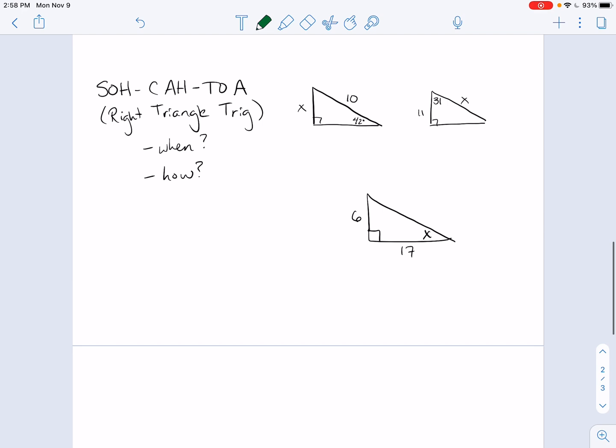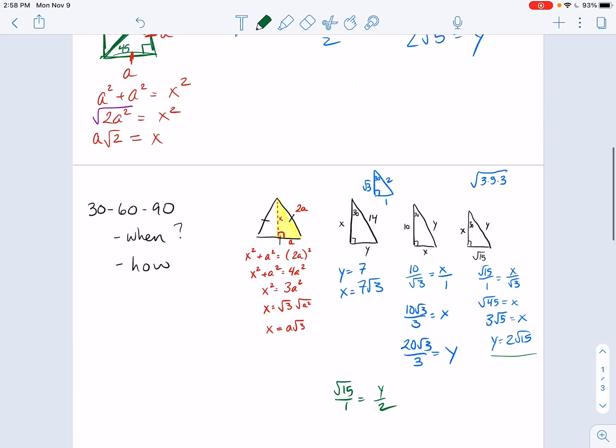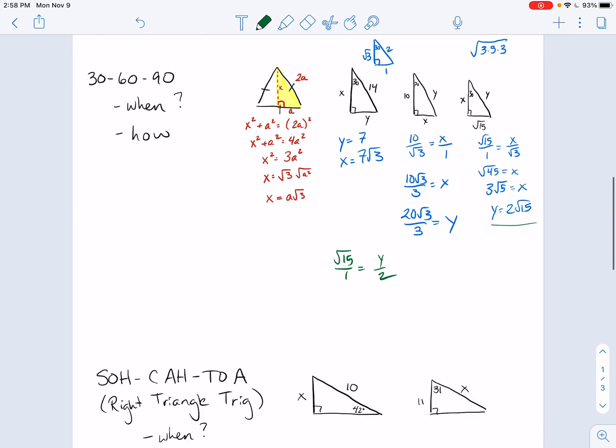Next one, the right triangle trig, SOH CAH TOA. So sine is equal to opposite over hypotenuse. Cosine is equal to adjacent over hypotenuse. Tangent is equal to opposite over adjacent. So when do we use this? Either when we're looking for an angle or when we have an angle and it's not a special right. So if it's not a 45, 45, 90, or a 30, 60, 90, then we can always use, I mean, you can always use SOH CAH TOA with these. It's just kind of a beating.